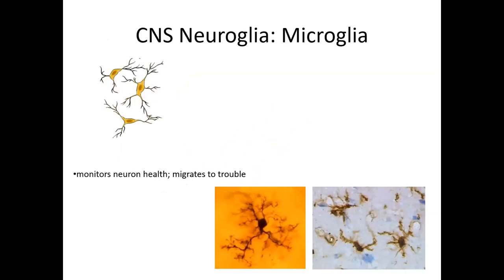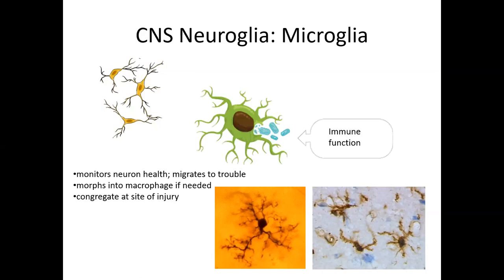The third neuroglial cell in the central nervous system is called a microglial cell, or microglia — meaning small cell. The cell body is very tiny, and this cell migrates to areas of trouble, like a Roomba vacuum cleaner. Similar to Langerhans cells in the skin, it comes from the same precursor as white blood cells, enabling it to become a macrophage and perform immune functions in the brain. Microglia congregate at sites of injury and trigger a localized inflammatory process.